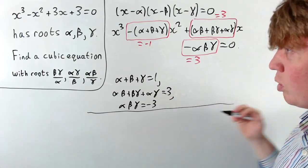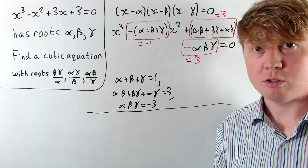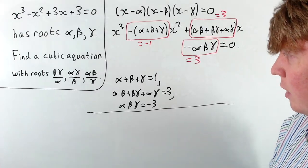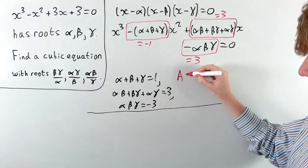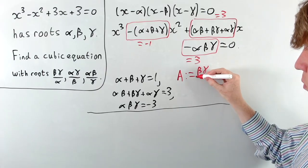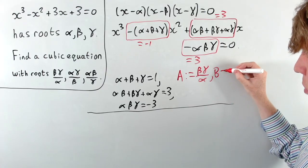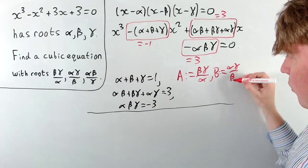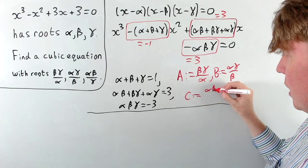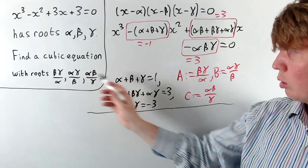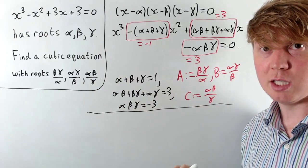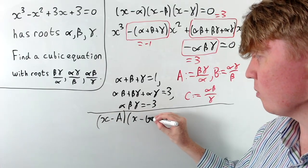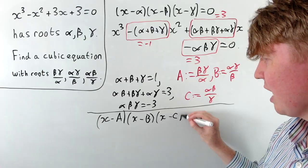Now we think about our new cubic equation with these roots. Rather than writing out the fractions, I'll introduce new variables: capital A is defined as beta gamma over alpha, capital B is alpha gamma over beta, and capital C is alpha beta over gamma. So if we have a cubic with roots A, B, C, we can again expand the brackets: x minus A times x minus B times x minus C equals zero.